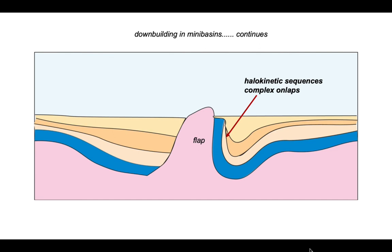And the halokinetic sequences can have quite complicated forms as they on lap the flap. They can on lap themselves and they can even continue across the top of the flap, break onto the edge of the salt. So a whole variety of pinch outs possible in the halokinetic sequences in the mini basin.